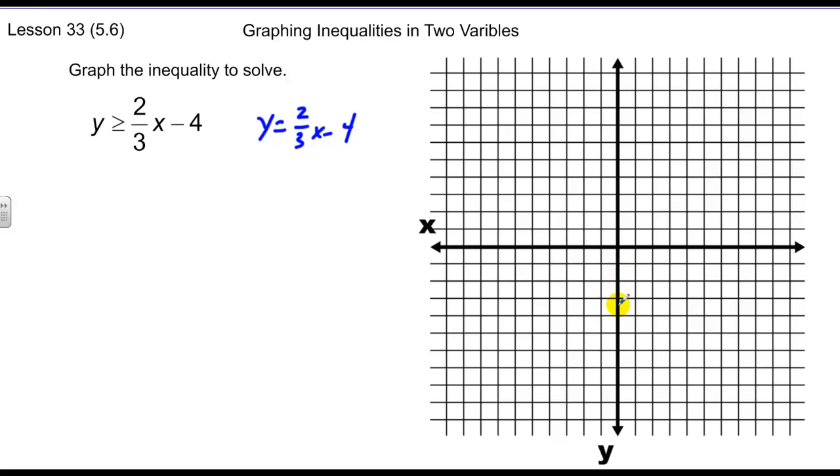So we go down to four, which is our y-intercept, and then rise two and run three. We could do that a couple of times if we wanted to, up two, over one, two, three. Connect my dots, and that's a graph of y equals two-thirds x minus four.